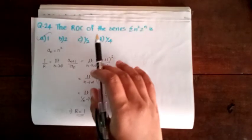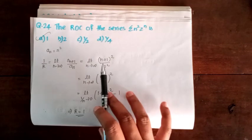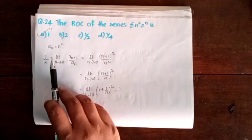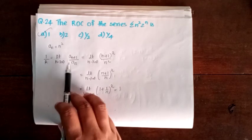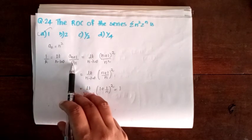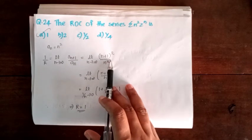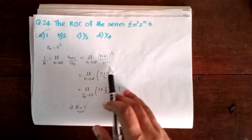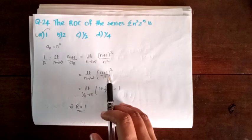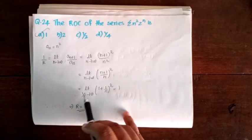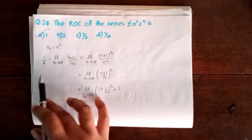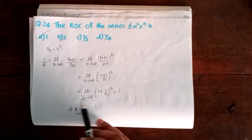Question 24. The radius of convergence of the series Σn²zⁿ. Let aₙ equal n², then aₙ₊₁ equal (n+1)². Using the ratio test: 1/R equal to limit as n→∞ of (n+1)²/n² equal to limit of (1 plus 1/n)² equal to 1. Therefore R equal to 1. Option A is correct.